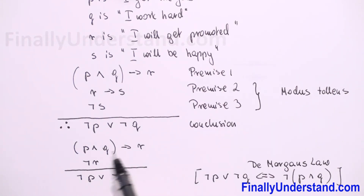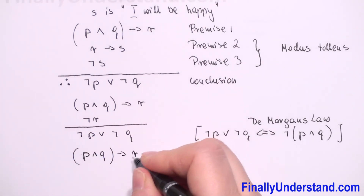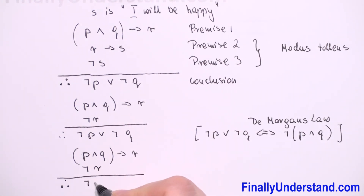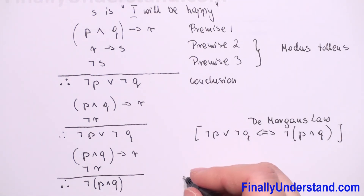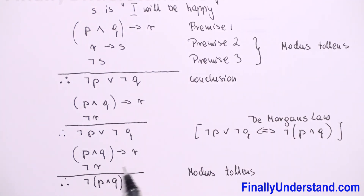Now we can rewrite our symbolic form. We have (P ∧ Q) → R and ¬(P ∧ Q). We see that this symbolic form matches again the standard form known as Modus Tollens. This means that our argument is valid.